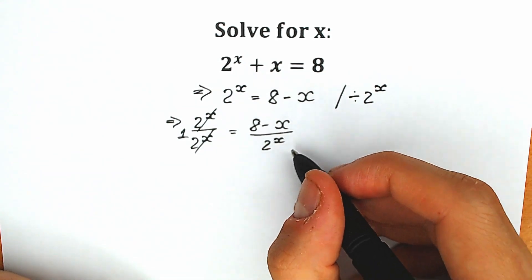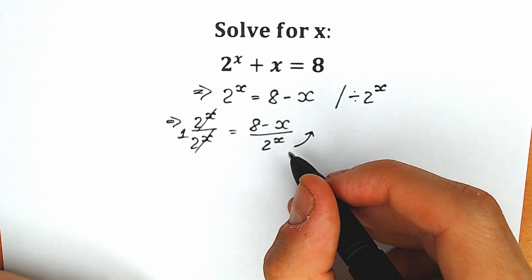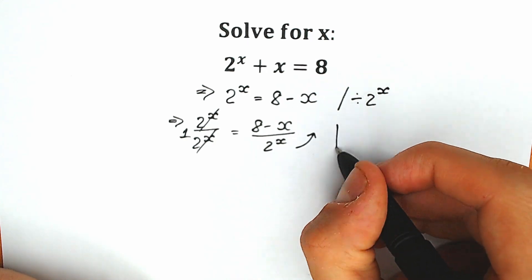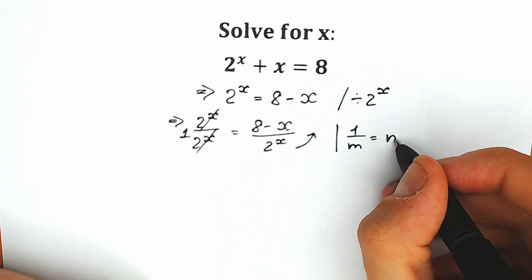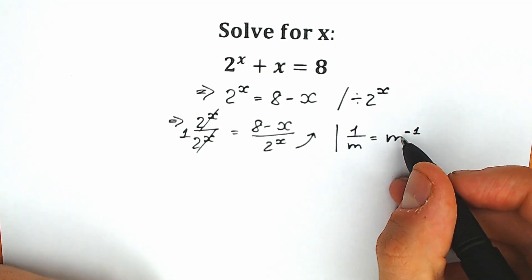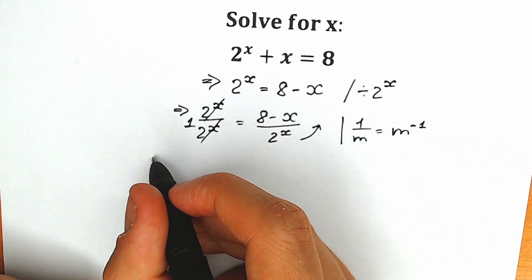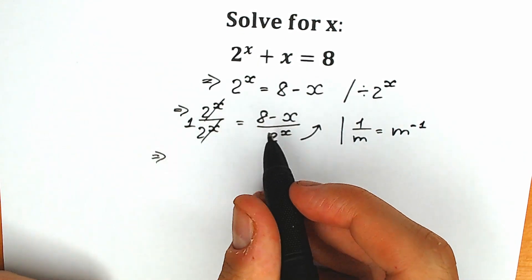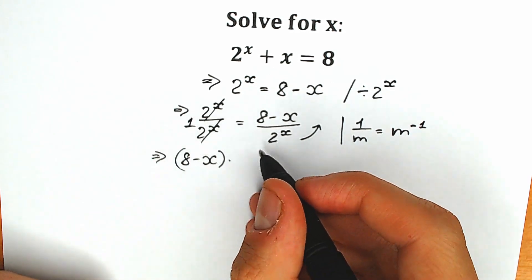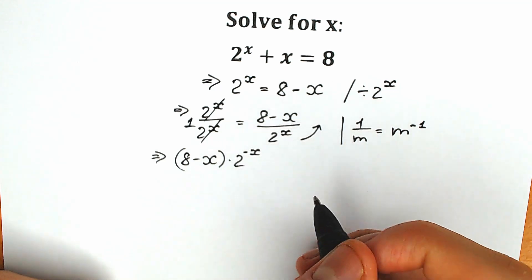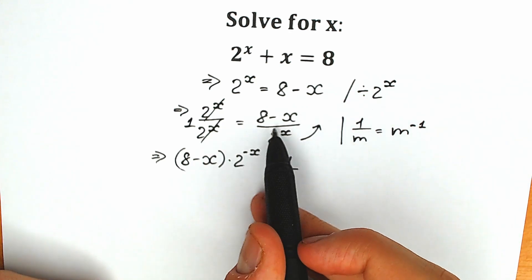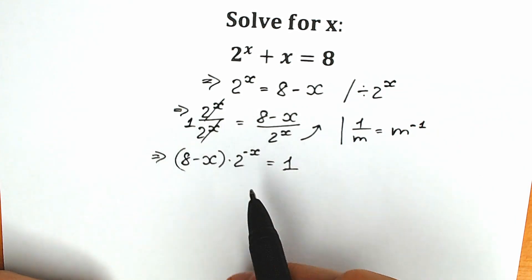On the right side, we can bring 2 to the power x into the numerator by changing the sign to negative, because 1 over m equals m to the power minus 1. When we bring something from the denominator to the numerator, we change the power to negative. So the final step is to change position and write this expression on the left side.